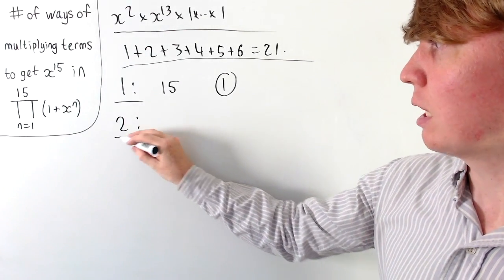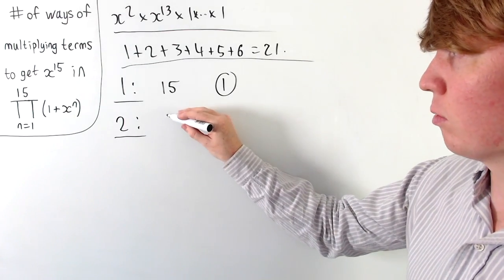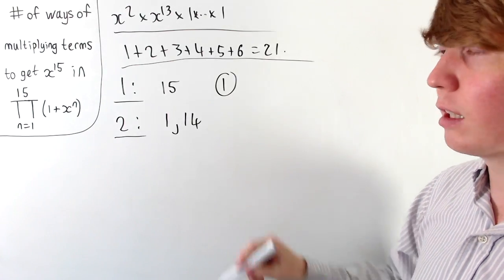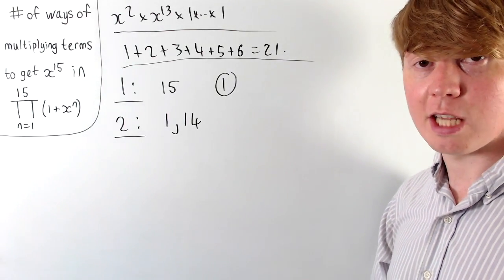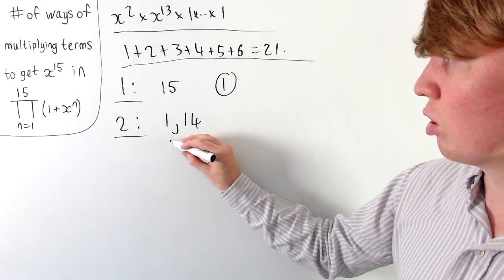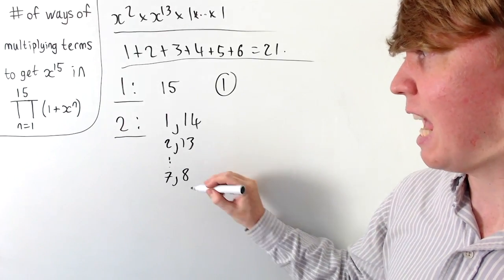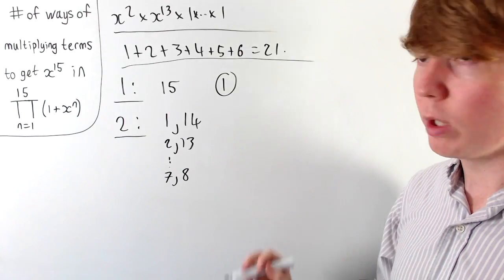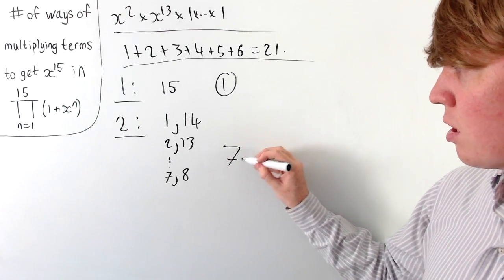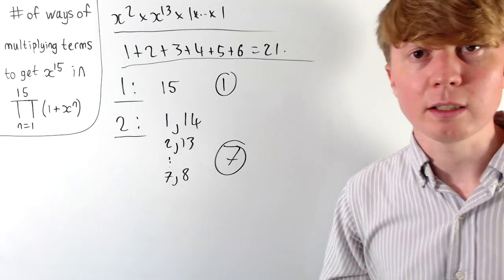If we take two terms involving x, we get more possibilities. For example, we could have x to the power of 1 times x to the power of 14 to give us x to the power of 15, with all remaining terms being 1. We could also have 2 and 13, all the way down to 7 and 8, at which point we've run out of further possibilities. So this gives us seven ways of doing this using two terms that involve x.